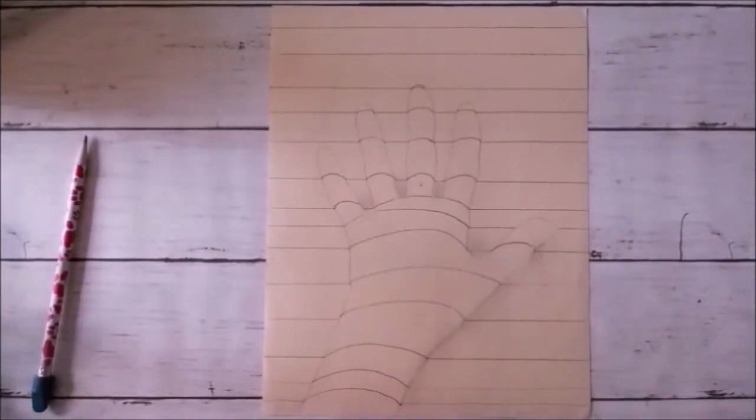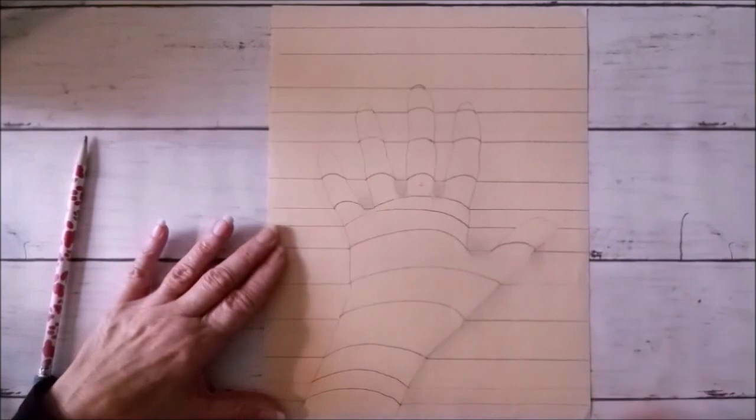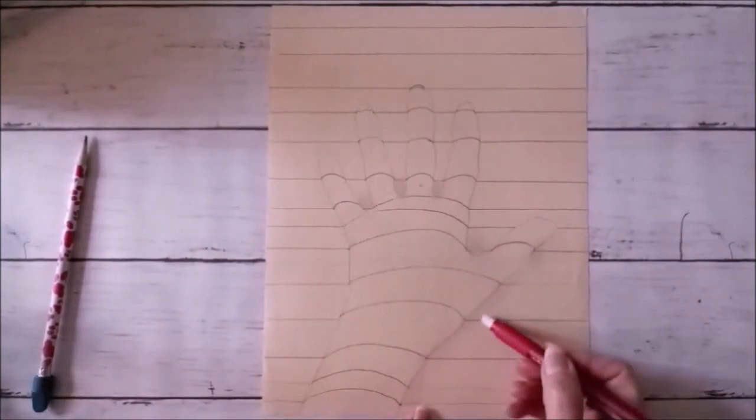You can smudge a little making sure that all the smudges stay right there on the background part. Not on the fingers themselves. And if you do get any on there it's okay. Clean up on your where your hand is. So it looks like all of the shadows are underneath.